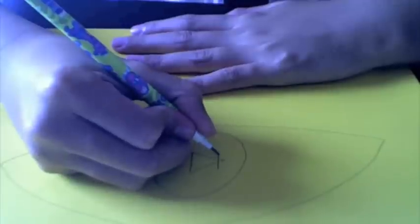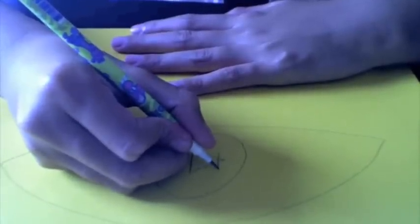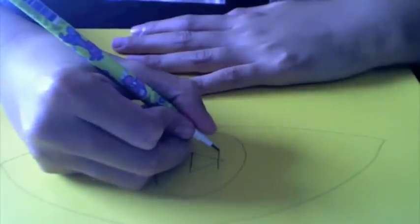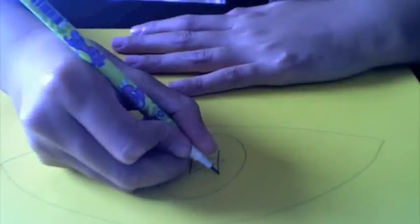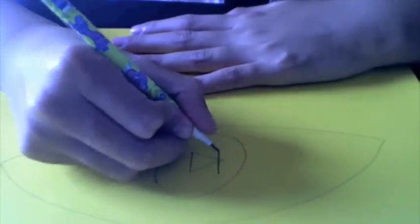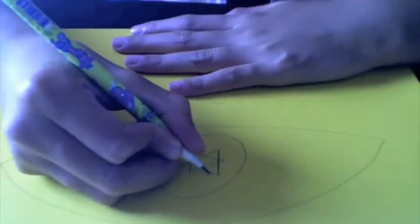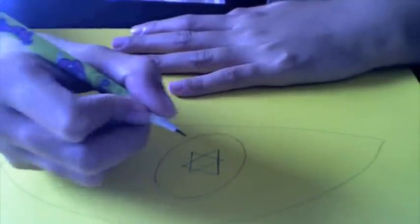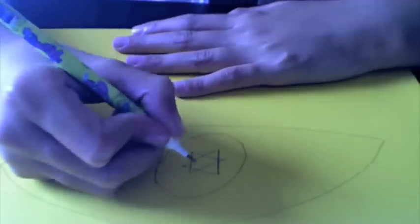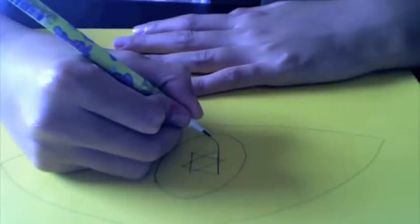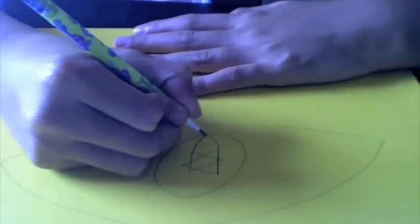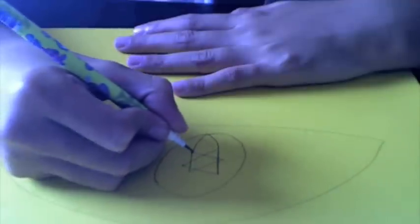Make sure you make a little hole there. Like that. And then draw like this. Make sure you make a little hole there. Like that. And then you go like this. And then like that. Like that. There.